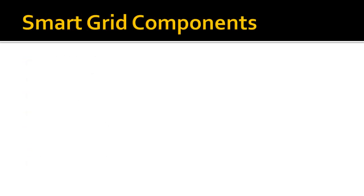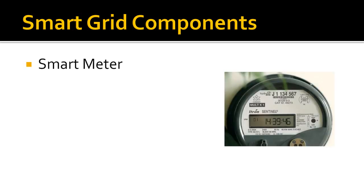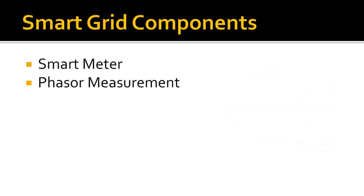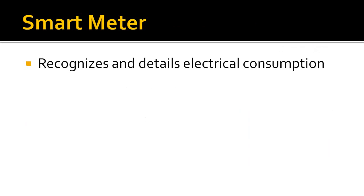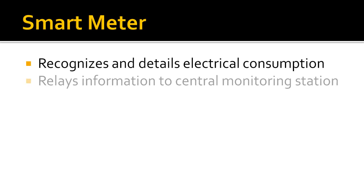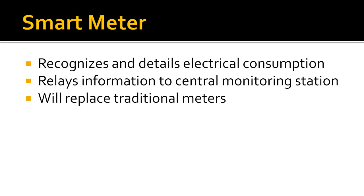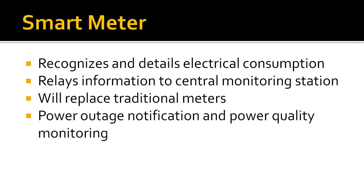Here are some of the major components needed to implement smart grid: smart meter, phasor measurement unit, information transfer, and distributed generation. A smart meter is essentially an electrical device that recognizes and details electrical consumption in a building within a specified time interval and automatically relays the information to a central monitoring station operated by the distribution company. Smart meters were developed to replace traditional meters for the majority of customers, including residential areas. Compared to traditional meters, smart meters have the added functionality of real-time sensors, power outage notification, and power quality monitoring. Time stamps are included in the recorded data, allowing distribution companies to know how much electricity was consumed during any time interval.